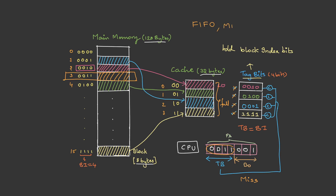We can also use MRU (most recently used), where the most recently used line is replaced, or LRU (least recently used), or we can even randomize and randomly replace any line. These all fall into cache replacement algorithms, which is a very important topic for GATE, so they will be discussed in detail in a separate lecture. For now, understand that one of these algorithms is used to replace a cache line.